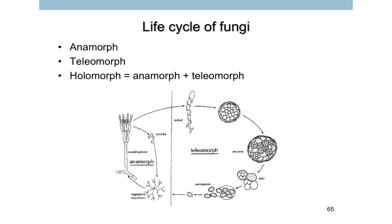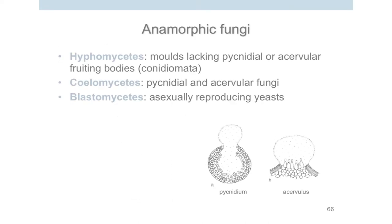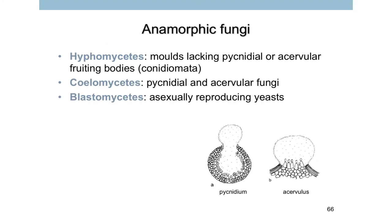Sometimes you can see only the left-hand side (asexual state), but sometimes in plant pathology you can see only the right-hand side. Clinically we usually see the asexual state. Anamorphic fungi are artificially grouped into three classes. The first and biggest is the hyphomycetes — fungi with just filamentous structures that don't have pycnidia or coelomycete fruiting bodies.